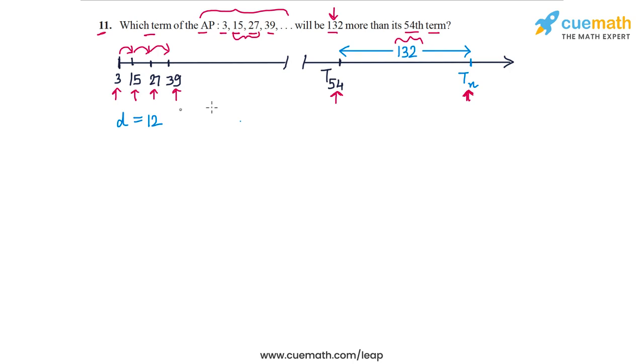This means that to take this jump of 132 units from the 54th term, how many jumps of D, of size D, would we have to make? We would have to make 132 divided by 12, and this is 11. So we would have to make 11 jumps, or we would have to go 11 terms ahead from the 54th term to land up at this term which is 132 more than the 54th term.